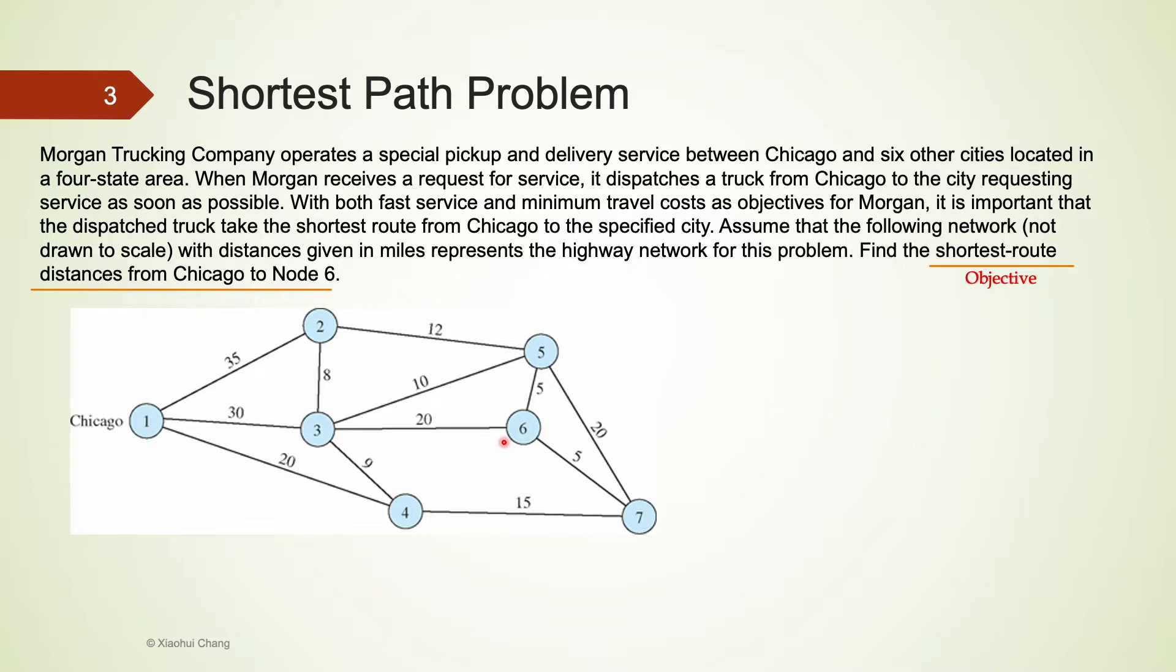How would we formulate this problem as a decision-making problem? Clearly, this is a decision-making problem under certainty, because we have the exact distance between all pairs of nodes. For example, from Chicago node 1 to node 3 is 30 miles. From node 7 to node 6 is 5 miles.